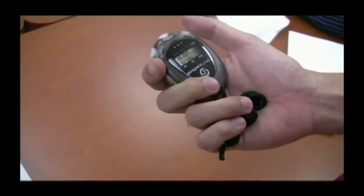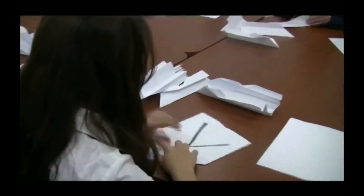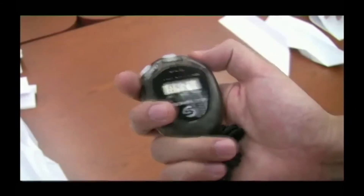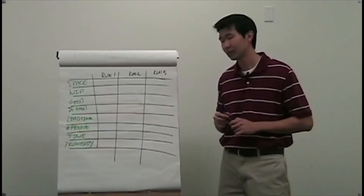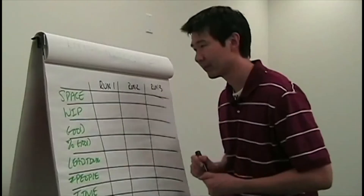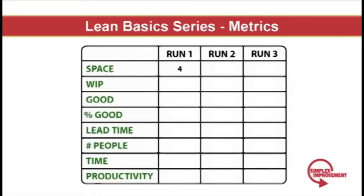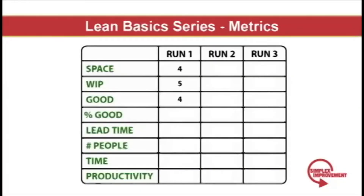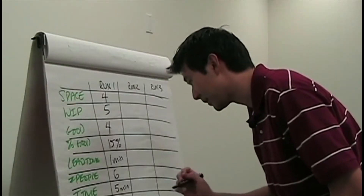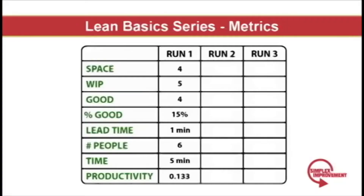In this simulation and the two to come, I write an X on a blank sheet of paper and start a separate timer to see how long it takes to produce my special order. I allow them to continue to build for five minutes before I stop this portion. Let's review the metrics on the first run: we used four tables, there were five in WIP, they only produced four good planes, only 15% were good, the lead time for the X-Plane was one minute, there were six people producing, the time was five minutes, and their productivity — good parts divided by people divided by time — was 0.133.